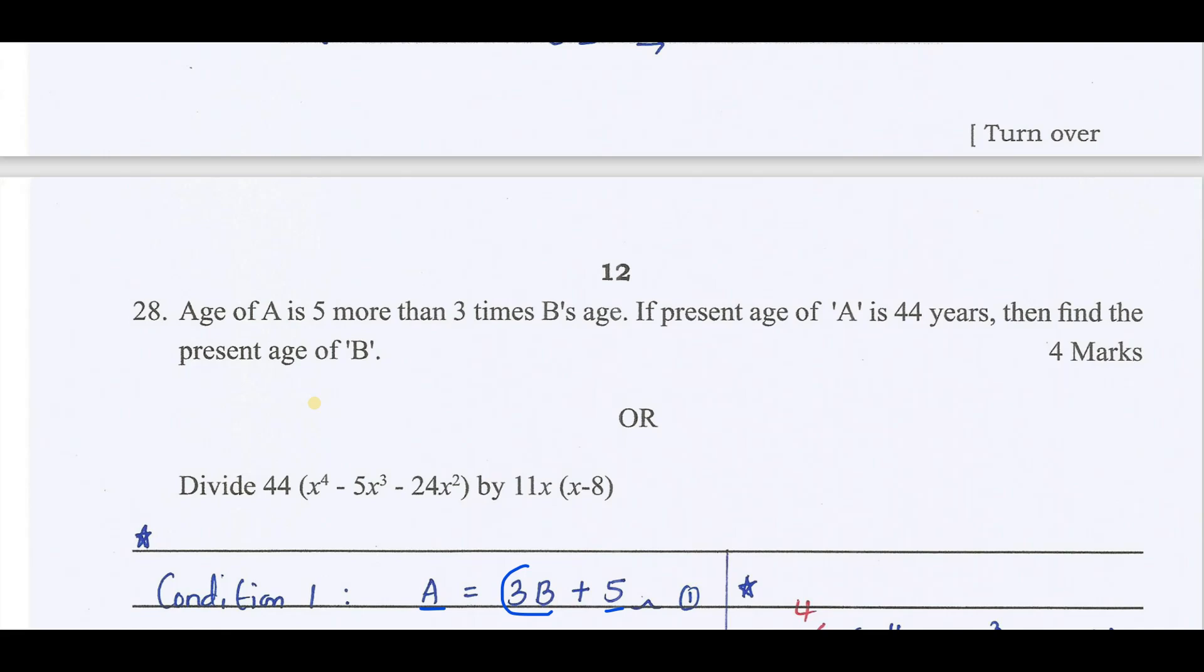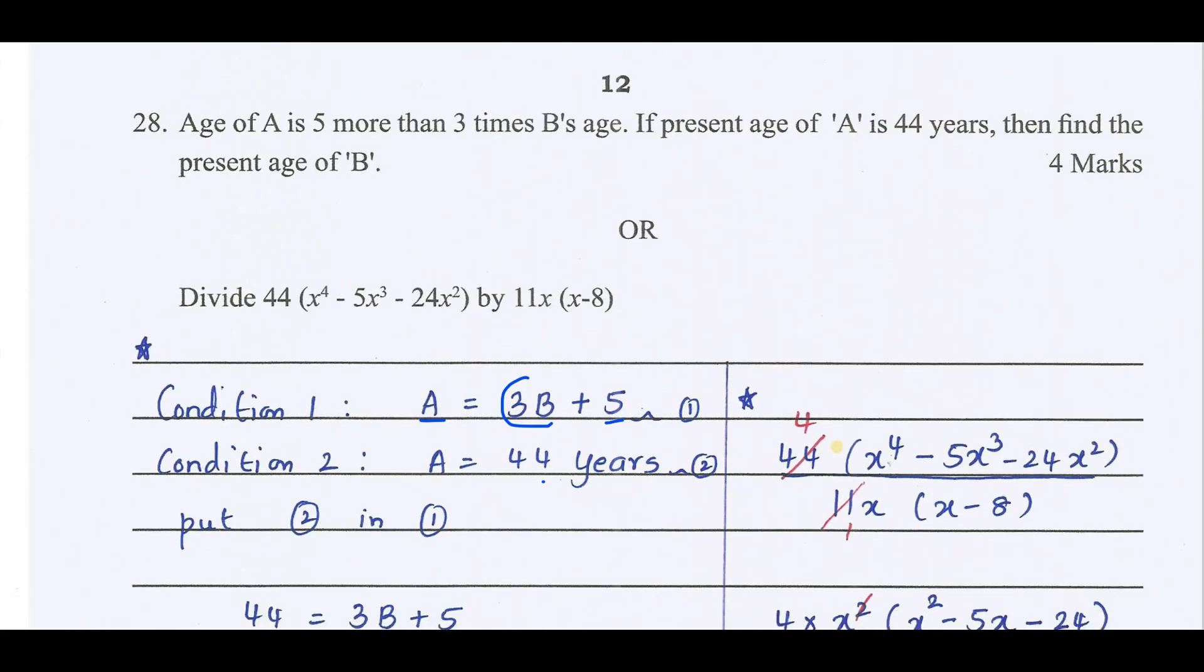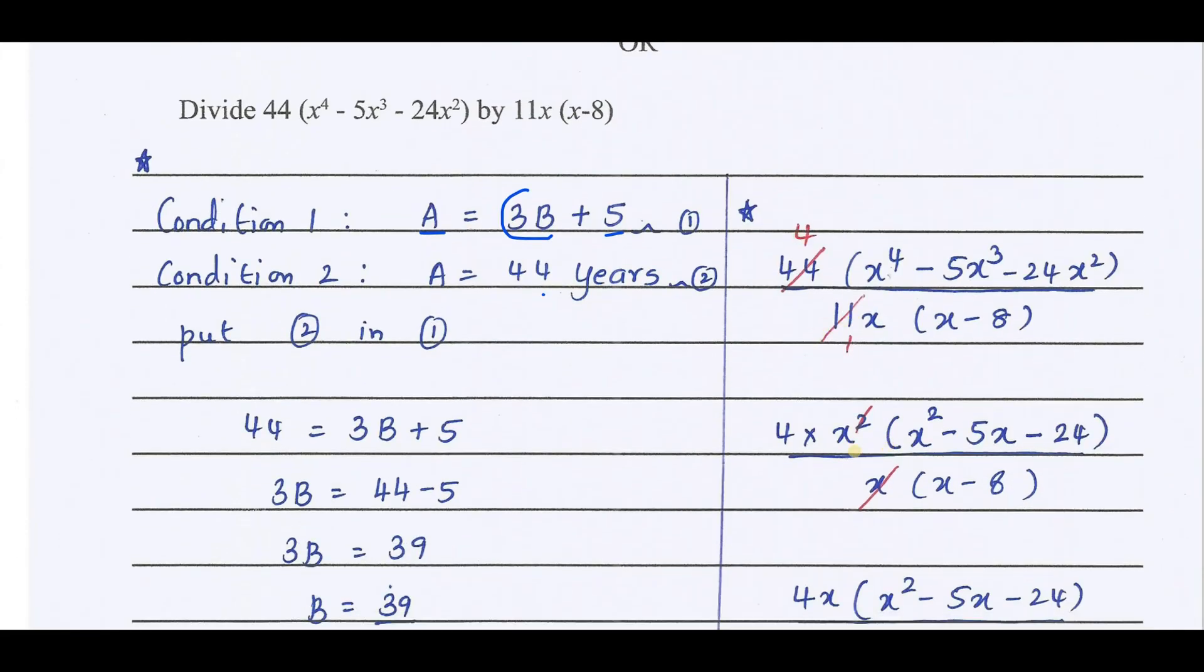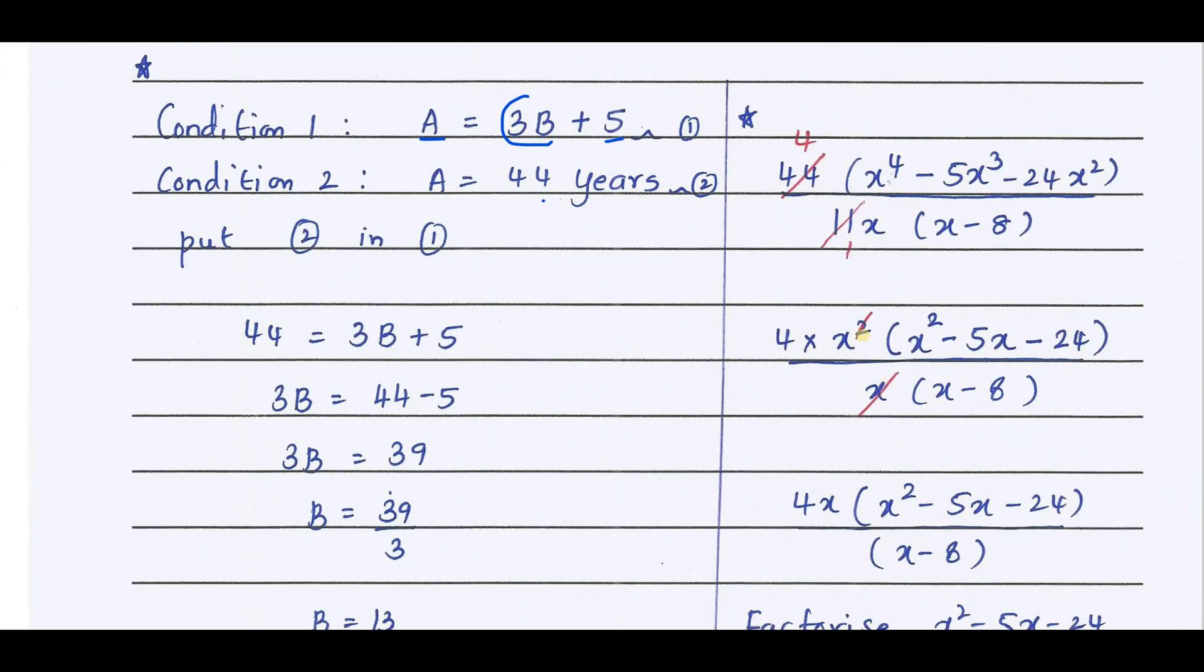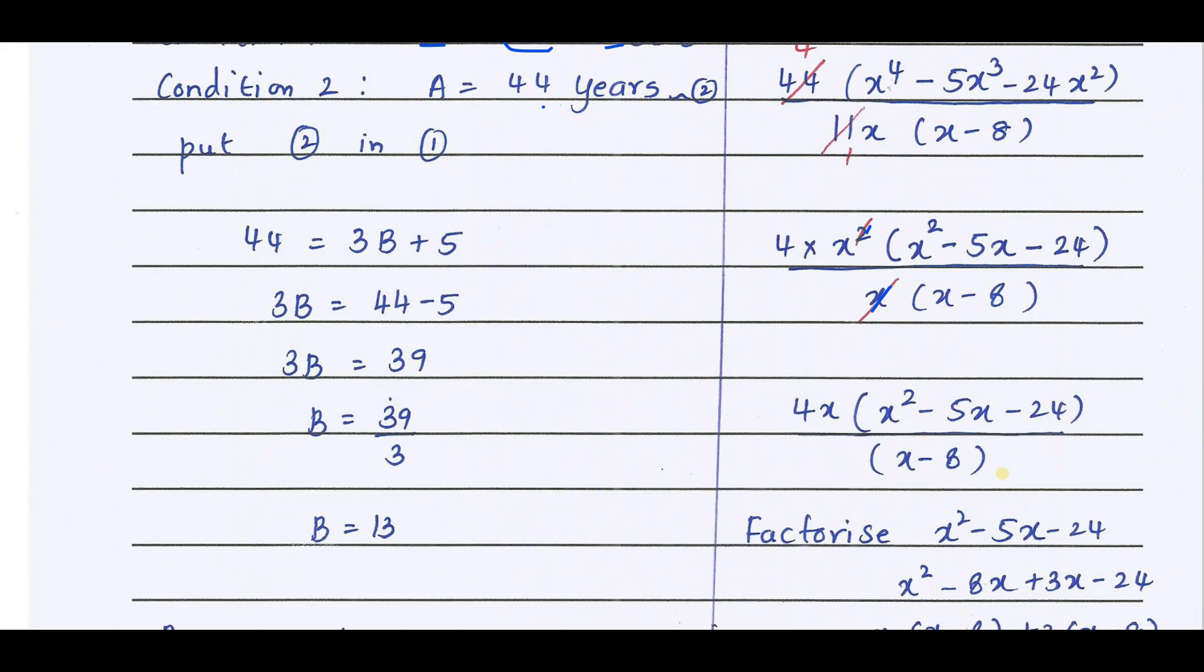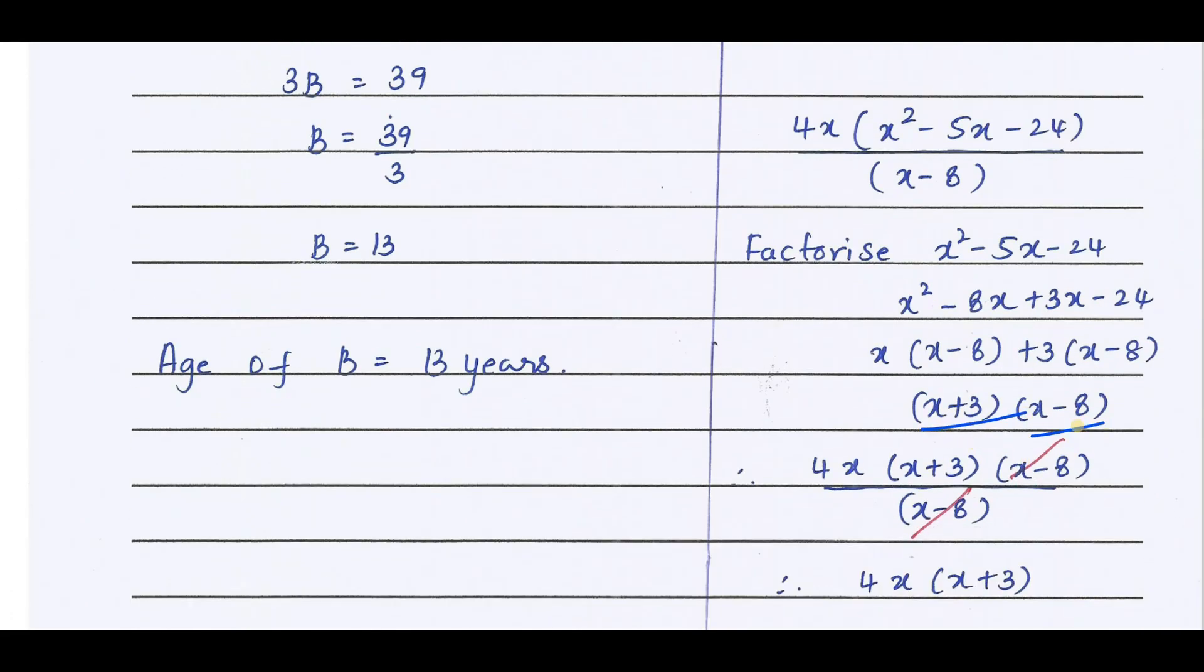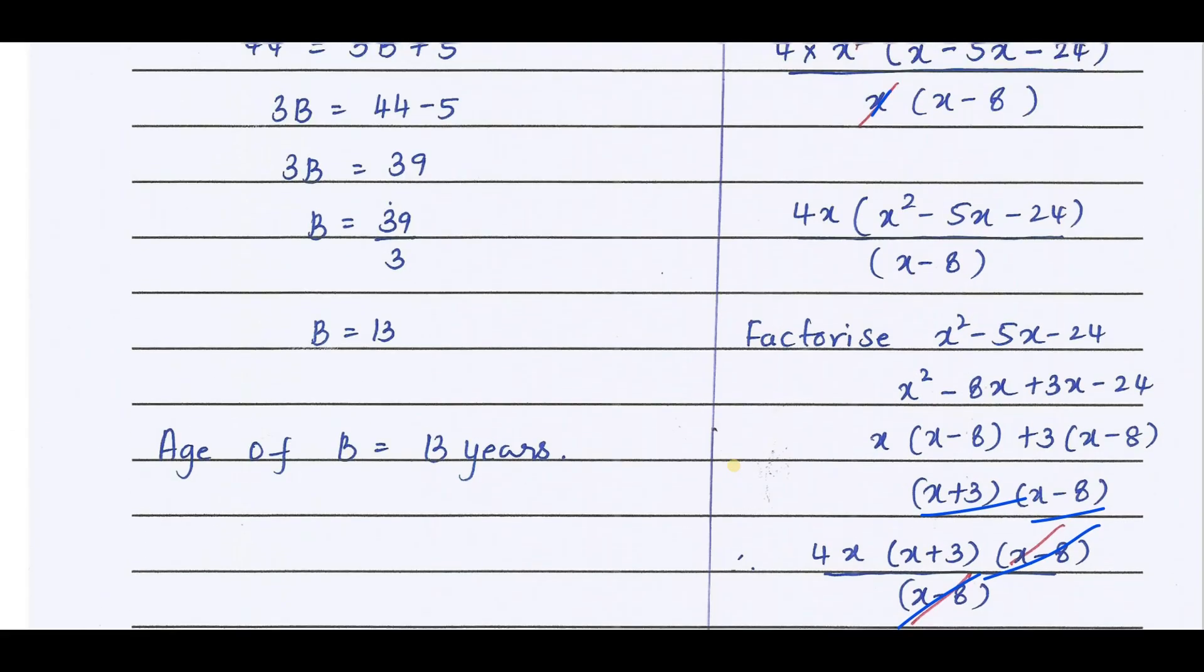Divide 44x⁴ - 5x² - 5x³ - 24x² by 11x(x-8). Taking 4x and x² common, we get x² - 5x - 24 by x². Factorize x² - 5x - 24. What we get is (x+3)(x-8). Substituting here, x-8 will cancel. What we get is 4x into (x+3).